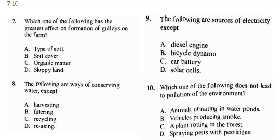Question 7 says: which one of the following has the greatest effect on formation of garlics on the farm? Type of soil doesn't really affect it; soil cover doesn't affect it; organic matter doesn't affect it. But a sloppy land — a land that is sloppy would definitely cause garlics to start forming, because it will cause erosions, and the water will be wearing out the top surface of the soil. Therefore it has the greatest effect on formation of garlics. The answer is sloppy land.